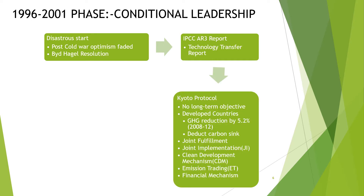The Kyoto Protocol happened in 1997. It was considered a failure — there were no long-term objectives. Developed countries had to reduce their greenhouse gas emissions by 5.2% between the period of 2008 to 2012. They were given the leeway to deduct carbon sinks, which could be in the form of land use change or an increase in forest area.